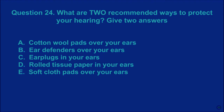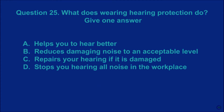Question 24: What are two recommended ways to protect your hearing? Give two answers. A: cotton wool pads over your ears. B: ear defenders over your ears. C: earplugs in your ears. D: rolled tissue paper in your ears. E: soft cloth pads. The correct answer is B and C.